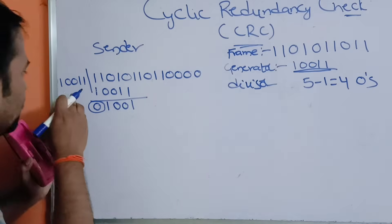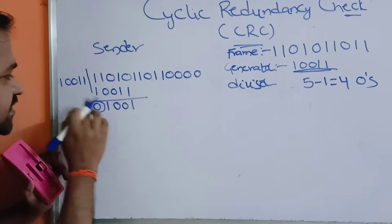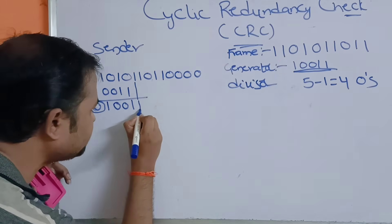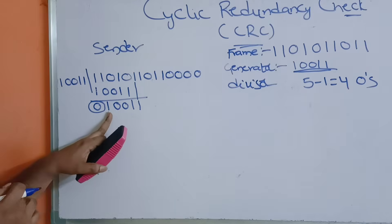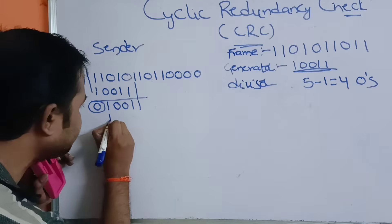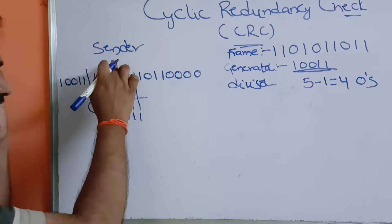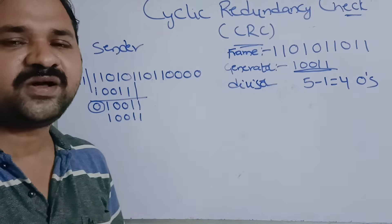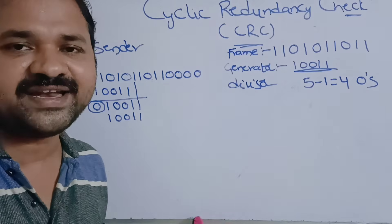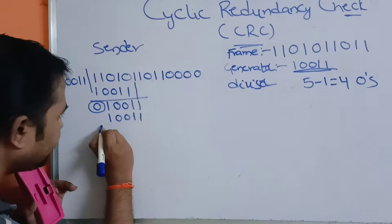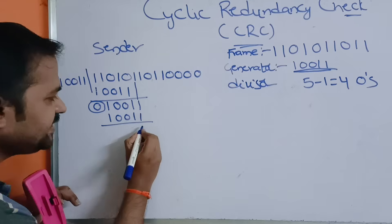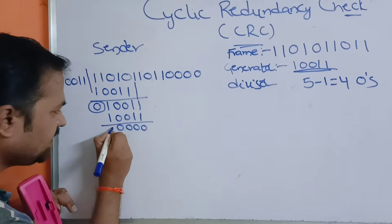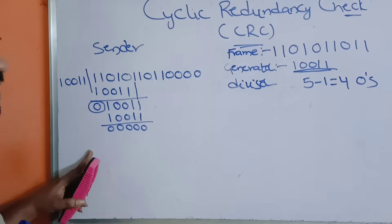Here we have only 4 bits but the size of the divisor is 5 bits, so we take the next bit from the message, which is 1. So we have 1 0 0 1 1. The most significant bit is 1, so 1 times the divisor 1 1 0 0 1 gives 1 1 0 0 1. Performing XOR: 1 1 = 0, 1 1 = 0, 0 0 = 0, and so on — all bits are same, so all results are 0. There is no need to write a quotient; our main target is finding the remainder.